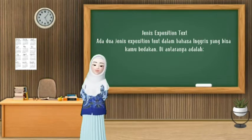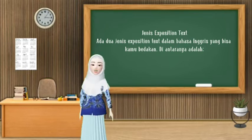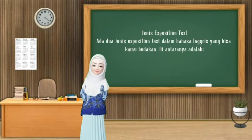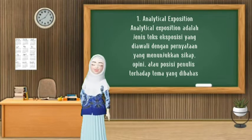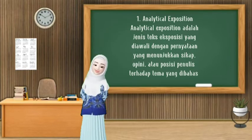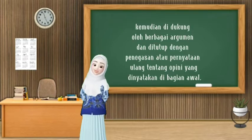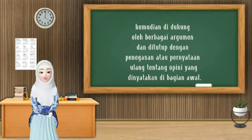Jenis exposition text — ada dua jenis exposition text dalam bahasa Inggris yang bisa kita bedakan. Untuk jenis yang pertama yaitu analytical exposition. Analytical exposition adalah jenis teks exposition yang diawali dengan pernyataan yang menunjukkan sikap, opini, atau posisi penulis terhadap tema yang dibahas. Kemudian, didukung oleh berbagai argumen dan ditutup dengan penegasan atau pernyataan ulang tentang opini yang dinyatakan di bagian awal.